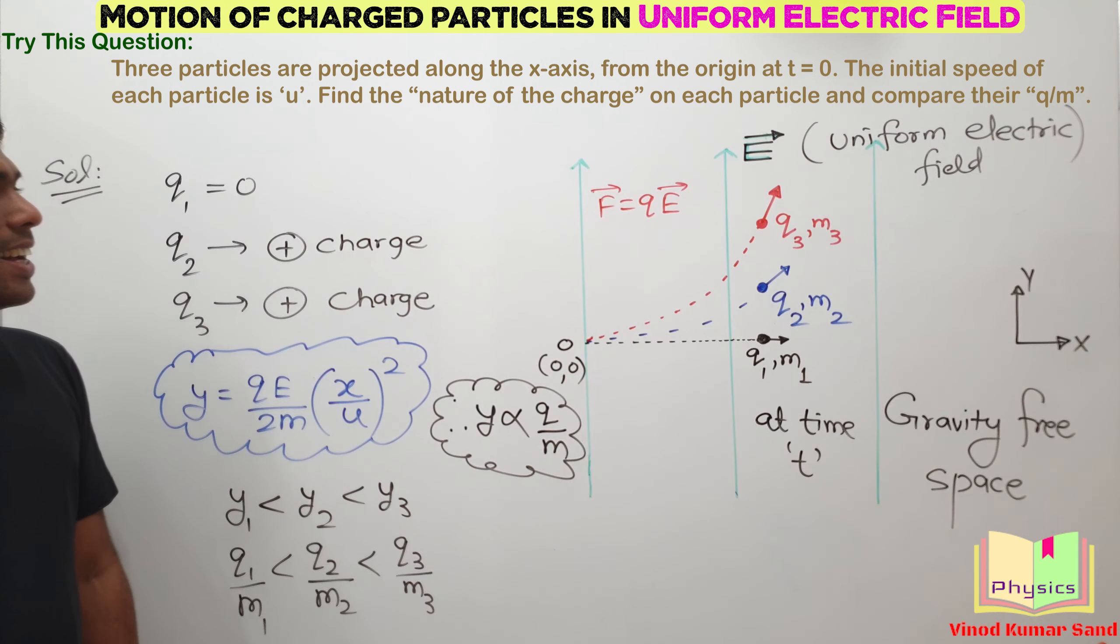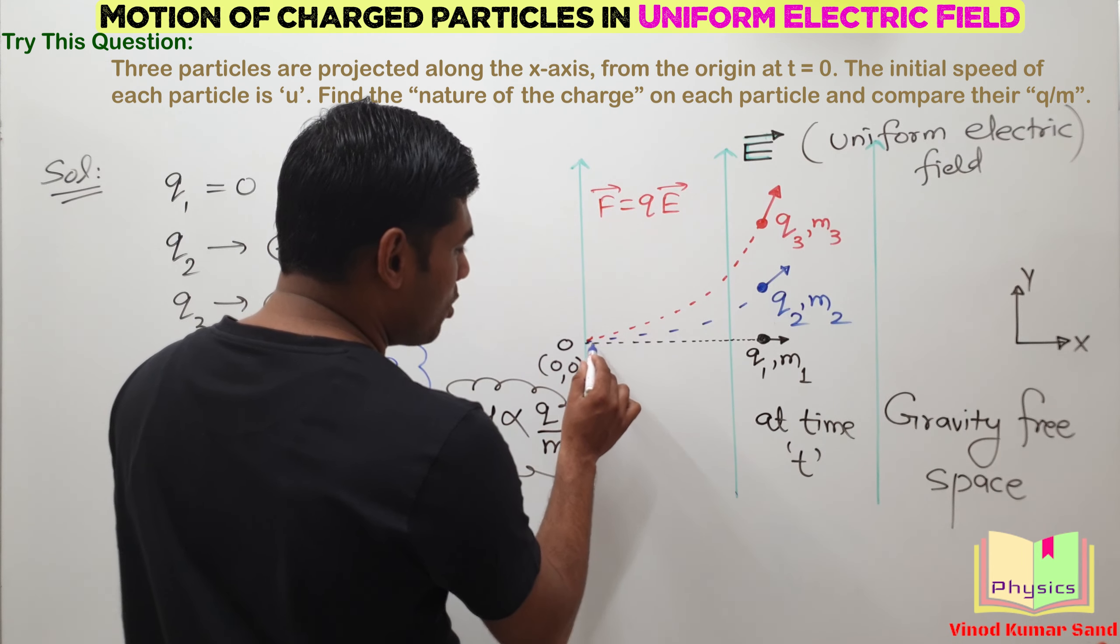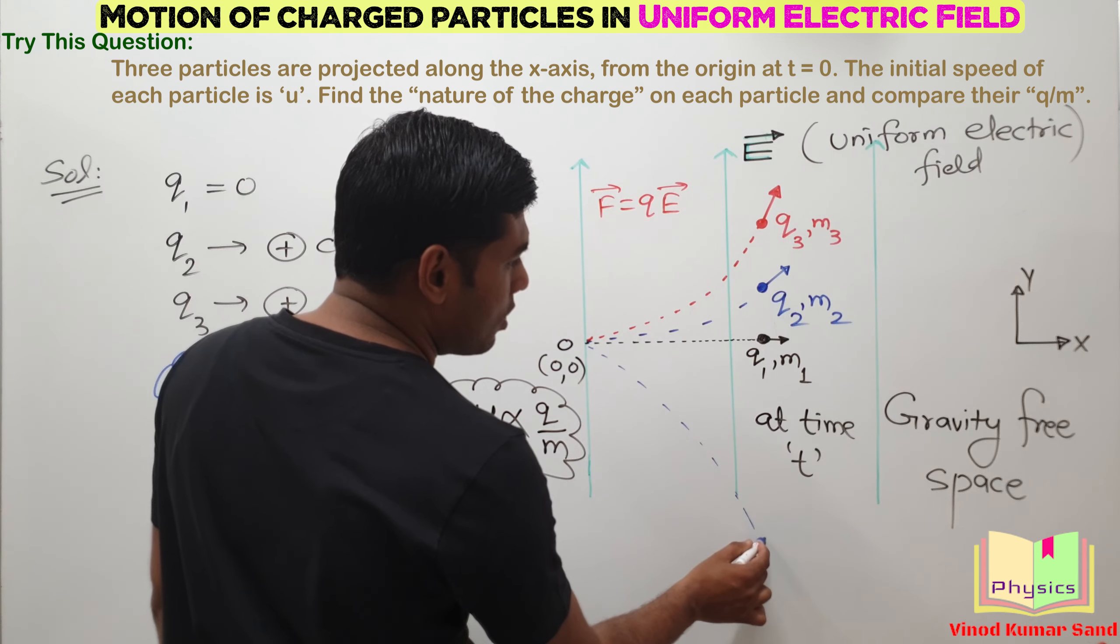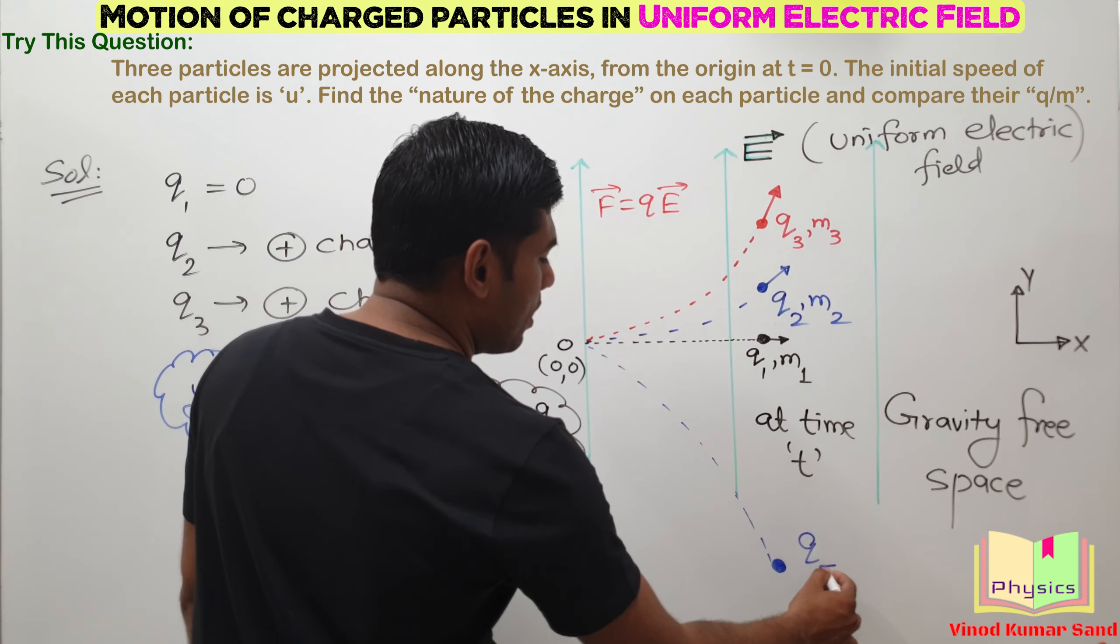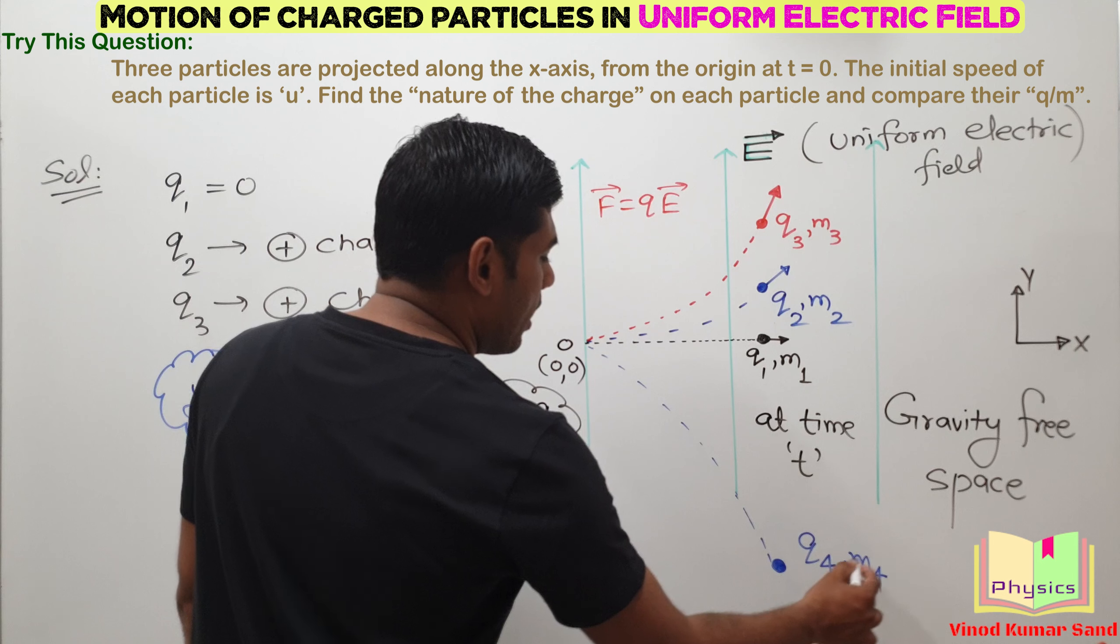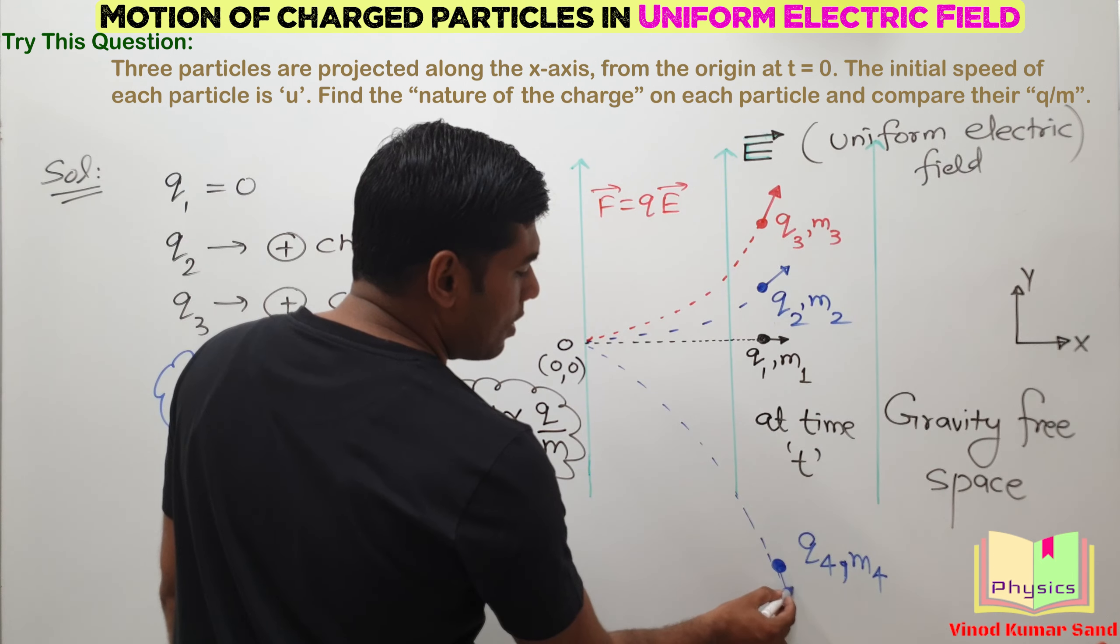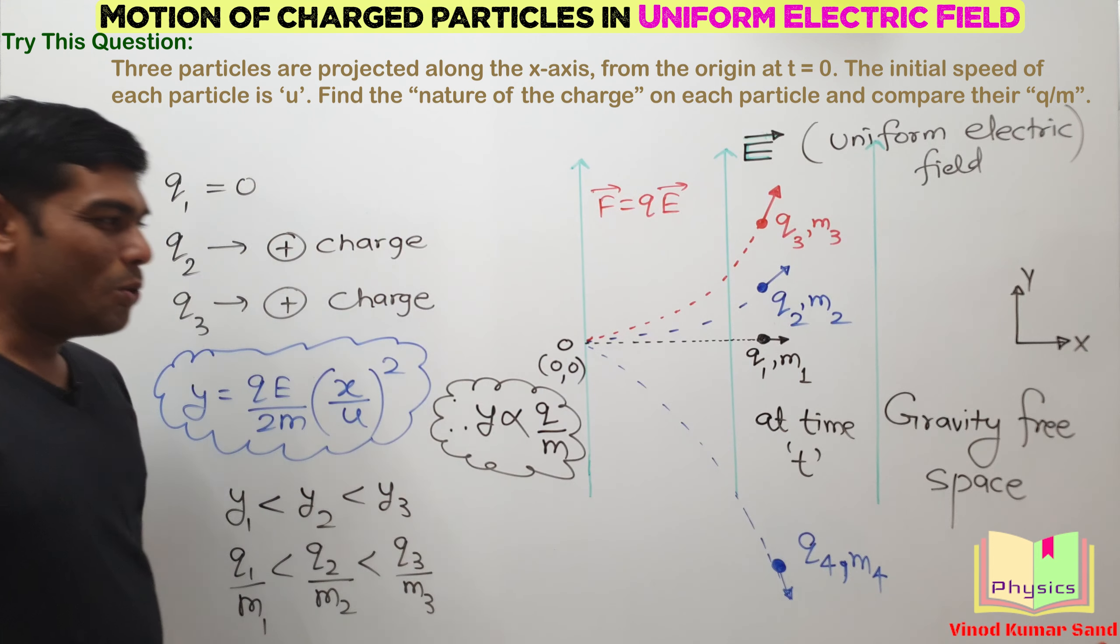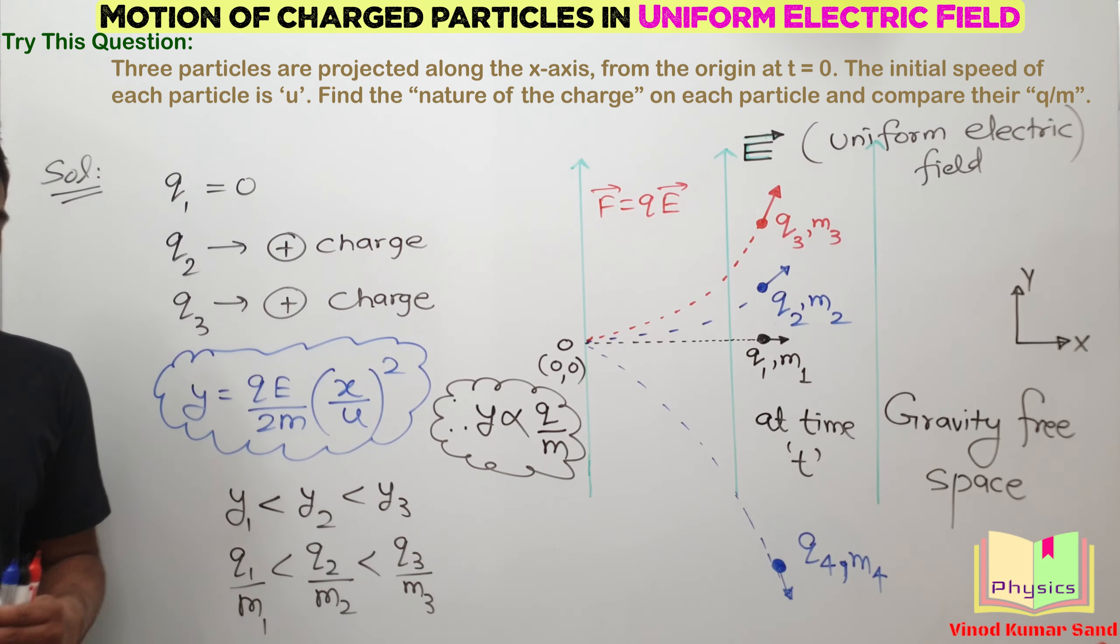If you understood this very well, let me bring another set of questions for you. What if I introduce one more charge into the picture? Let's say this is some charge and I name it Q4 having the mass M4. At the time t, Q4 is going like this. Now can you repeat your answers in comment box? I will wait for your answers. Stay awesome. See you again.